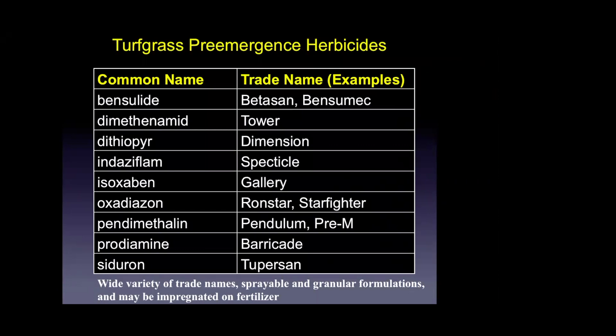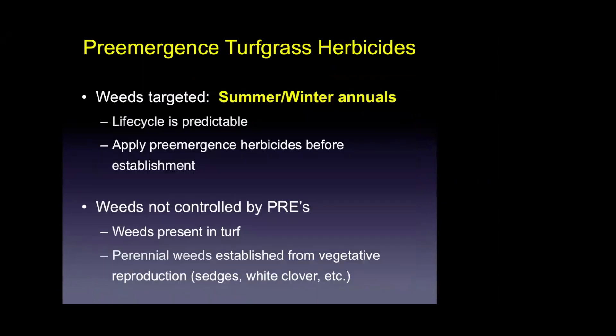Pre-emergent herbicides are used to control summer and winter annual weeds only — those that establish from seed. They are not targeting perennial weeds or weeds that are currently established in turf, because they are not effective once the plant is healthy and actively growing.